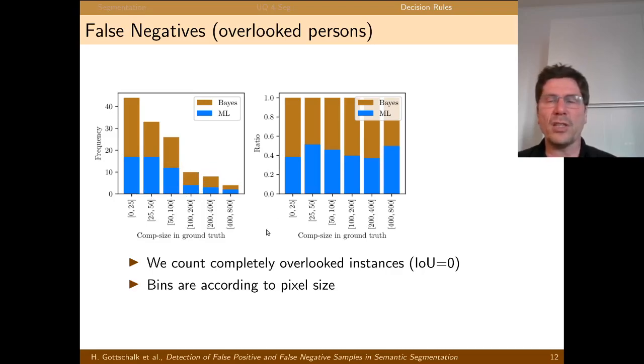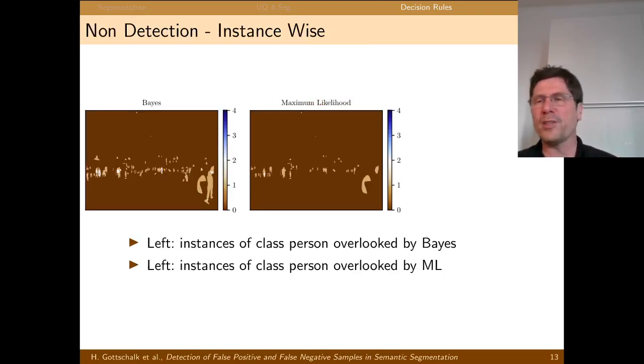So these are pedestrians overlooked in the data set of 20,000 images, and this is here the relative amount. So you roughly overlook half as many instances of the category pedestrian if you use maximum likelihood instead of Bayes. Of course that again comes at the cost of many more false positives.